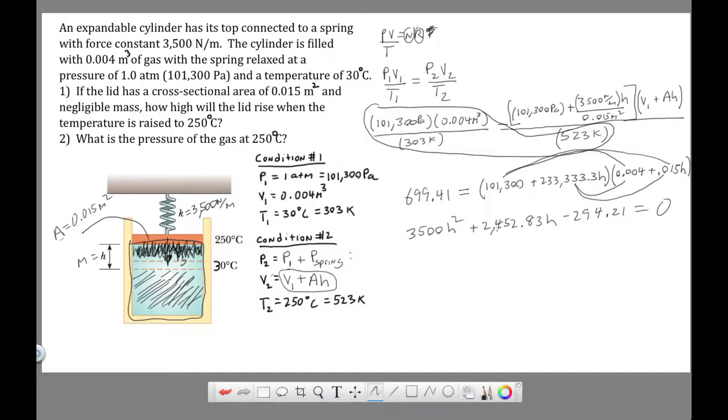So this is quadratic. Your A is 3,500, your B is 2,452, and your C is negative 294.21. H is going to give two values, a positive value and a negative value. I did not solve for the negative value, but that's not the answer. H cannot be negative. The positive value comes out as 0.104 meters, which is 10.4 centimeters. That's the answer to the first question.